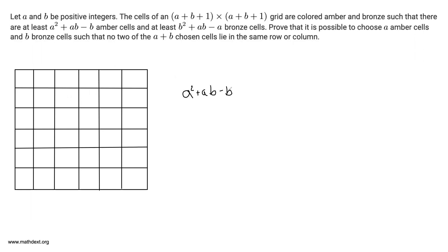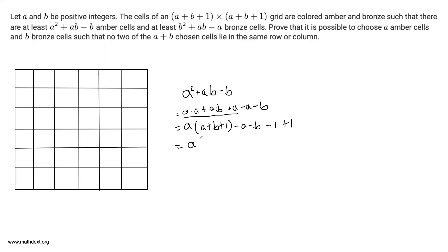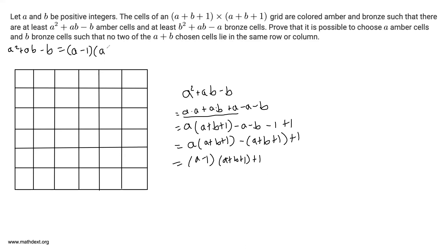We don't know anything about A and B, but we know that the grid is A+B+1 by A+B+1. And we see A²+AB, so maybe it's possible for us to factor A+B+1 from this, because A² equals A times A plus A times B. If we add A and subtract A, we end up with A times (A+B+1) minus A minus B. We can go a step farther because negative A+B looks like A+B+1, so we subtract one and add one again. This gives A times (A+B+1) minus (A+B+1) plus 1, which equals (A-1)(A+B+1) + 1. So A²+AB-B = (A-1)(A+B+1) + 1.